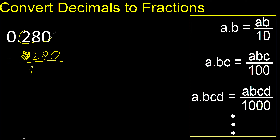After the point there are three numbers, therefore three zeros — one, two, three. The last digit is zero, therefore eliminate.